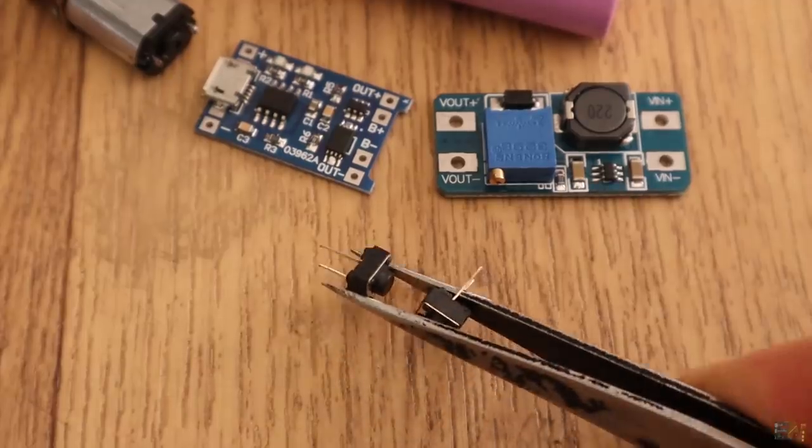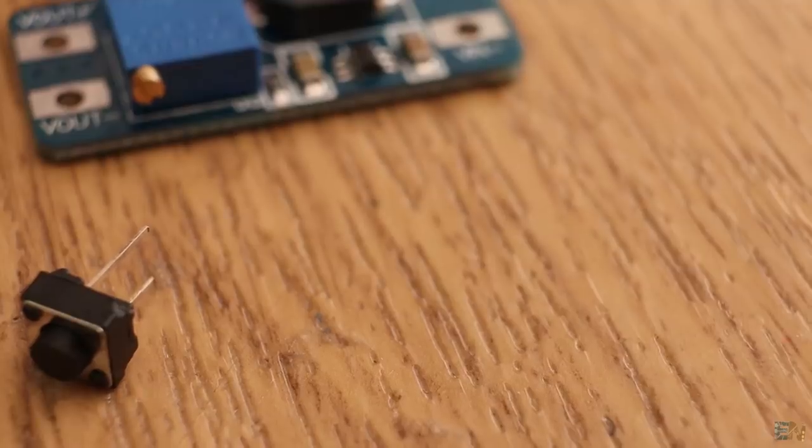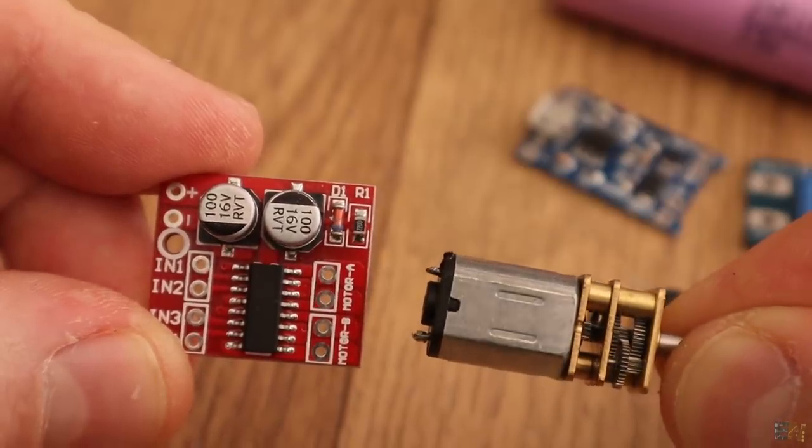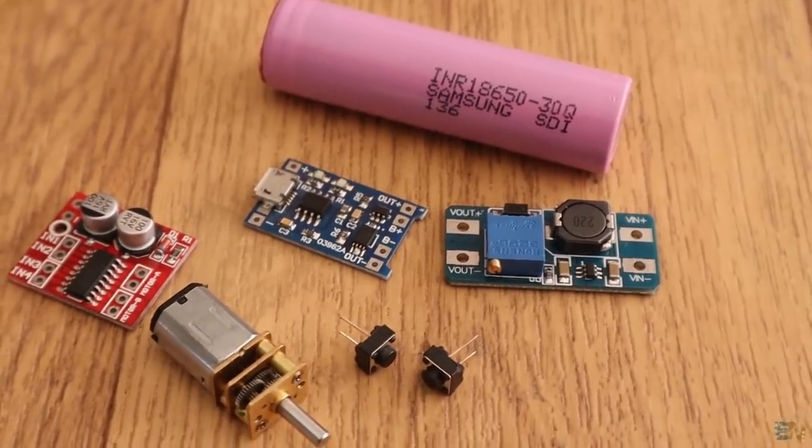To control the rotation, we could use a simple push button. But if we want to rotate in both directions, we will need an H-bridge. This module could rotate the motor in both directions. See my video about how an H-bridge works below in order to understand more.